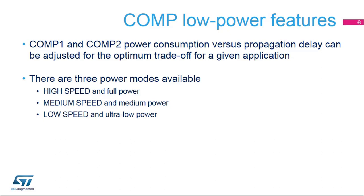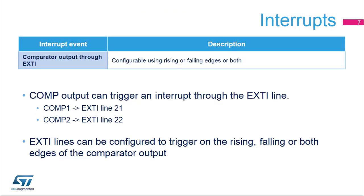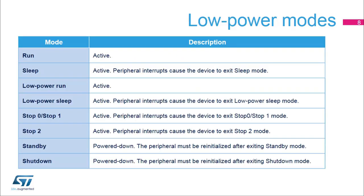The comparator can stay active even if the rest of the system is suspended and the clock is switched off. It can trigger an interrupt on the rising, falling, or both edges of the comparator output through the EXTI line. The on-chip comparator remains active and can be used to wake up the device from all low-power modes except standby and shutdown.